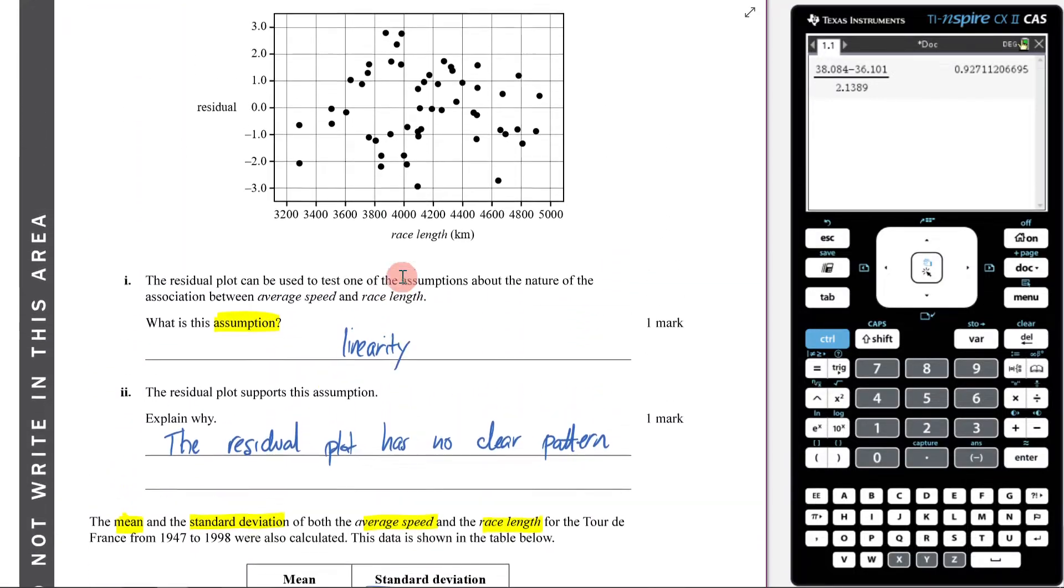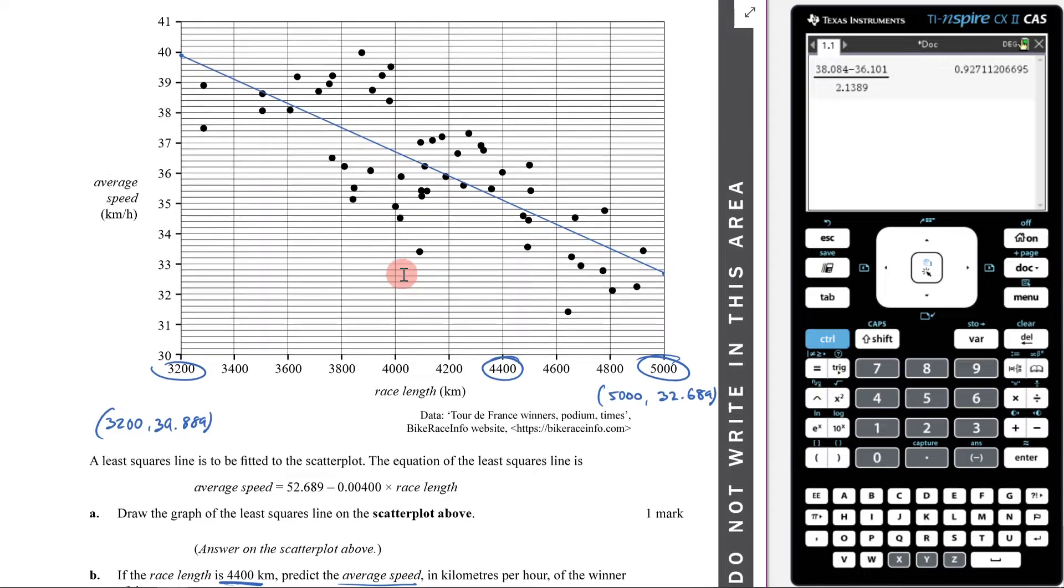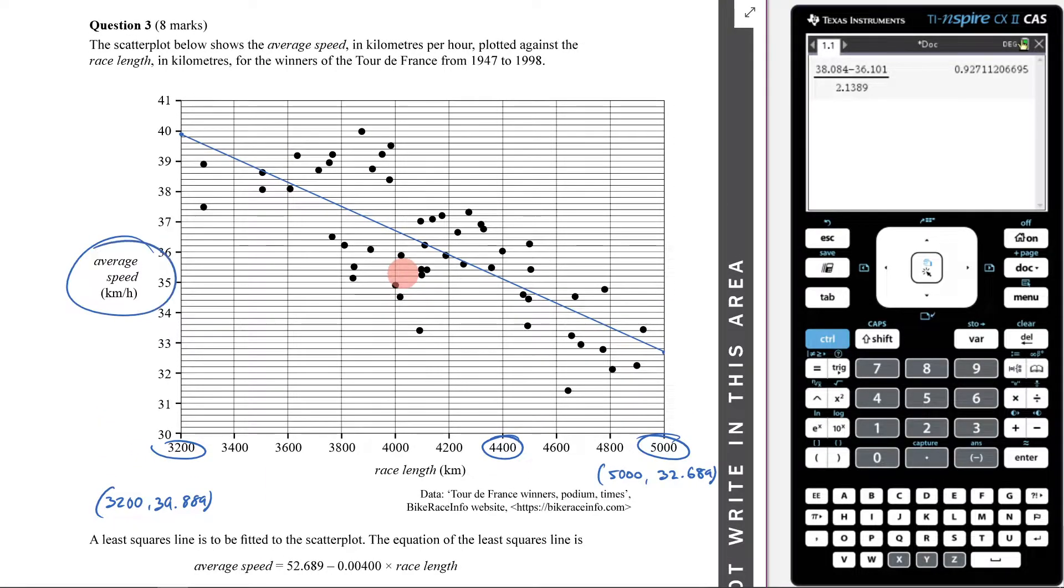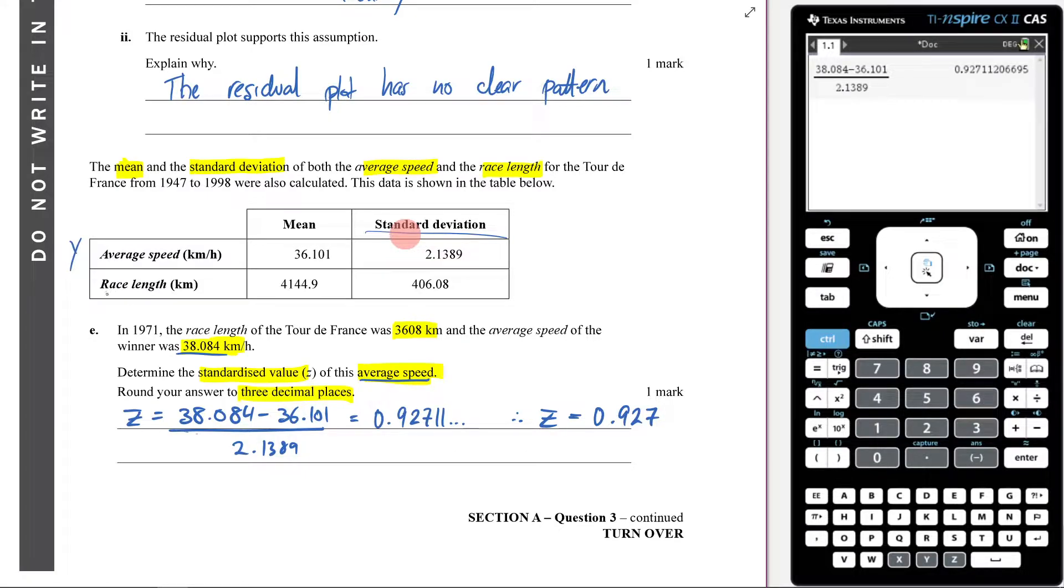Now what you need to know, and hopefully this is very clear, is that all of this is one big question. So average speed is my y value, and race length is my x. So now when I come down here, I know that the average speed is my y and the race length is my x. So I've been given the mean of the y, the standard deviation of the y, and the same with the x values here.